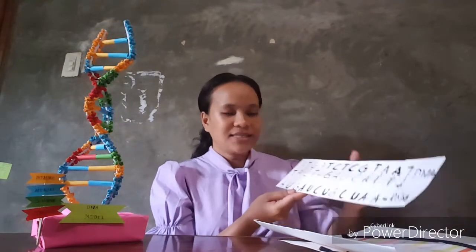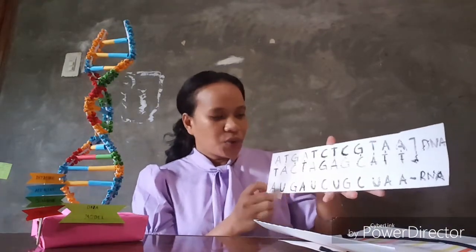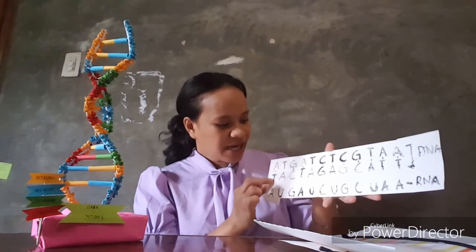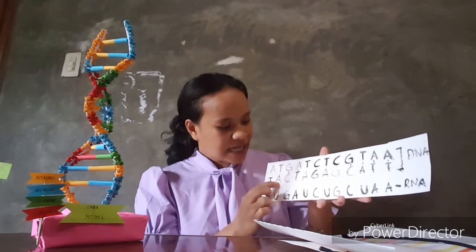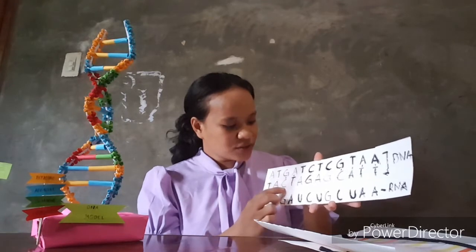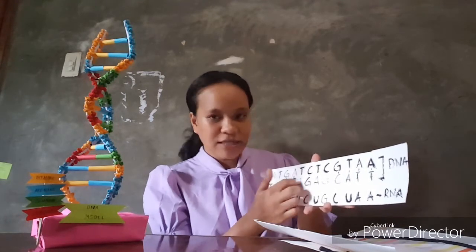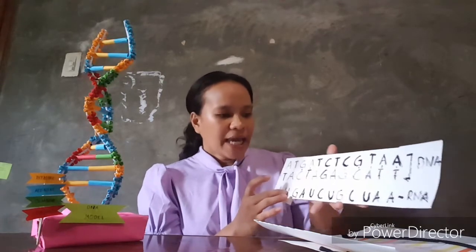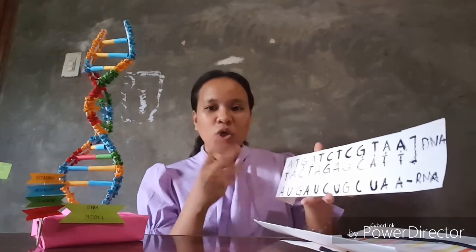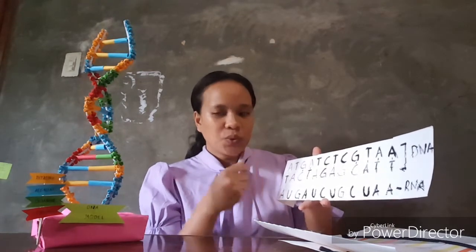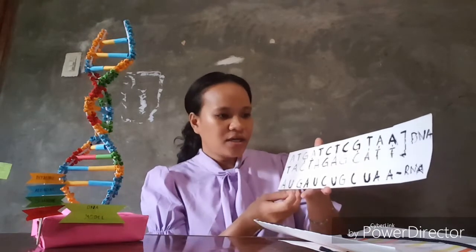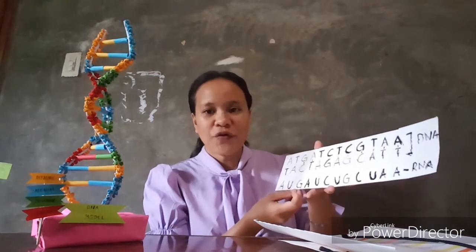I have my DNA example here. We have adenine, thymine, thymine, adenine, guanine, cytosine, adenine, thymine, and so forth. If we combine the DNA, we have a result of RNA.